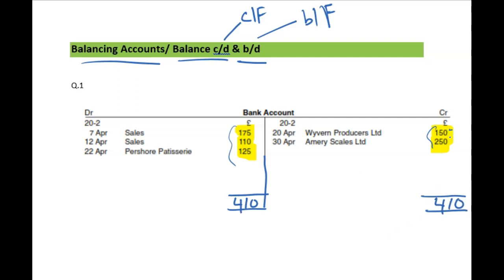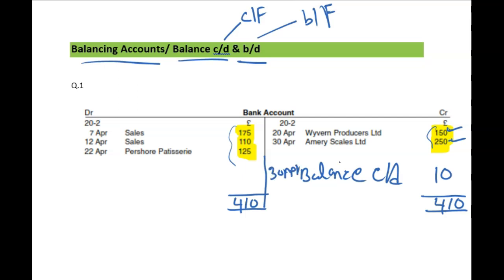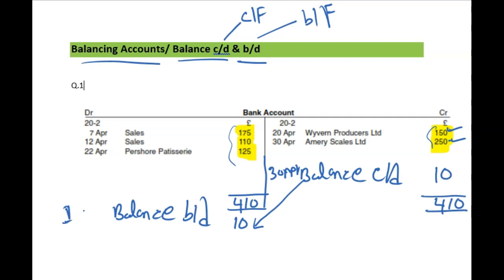Then obviously these two don't make 410 — 410 minus these two, the remaining is 10 pounds. That is your balancing figure. We call it balance CD, balance carried down, and the date is always the last date of that particular month, which is 30th of April. The same balance CD becomes balance BD on the other side of the account after the total, which is 10 pounds — brought down — and that's the first of the next month, 1st of May.